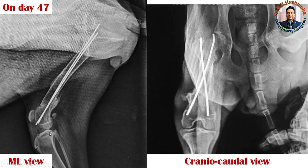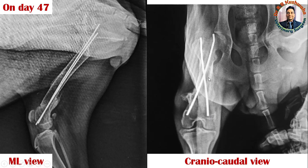Looking at the tibia, there is no problem there. In the craniocaudal view on day 47, there is no fracture line visible, and the extra callus is seen towards the lateral side. Combining both views, we could say the extra callus formation is at the caudal and lateral side. On the basis of these mediolateral and craniocaudal views, along with physical examination and the condition of the animal, we decided to go ahead with removal of both K-wires from the trochanteric fossa.